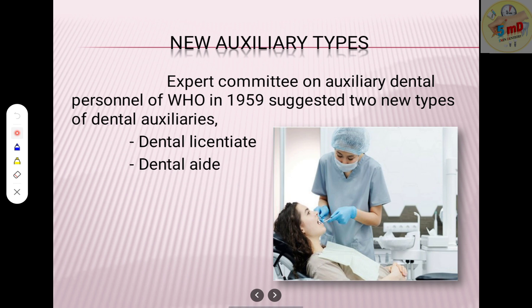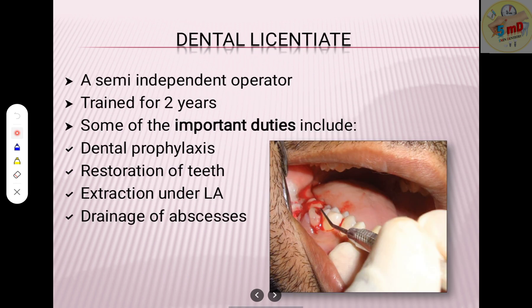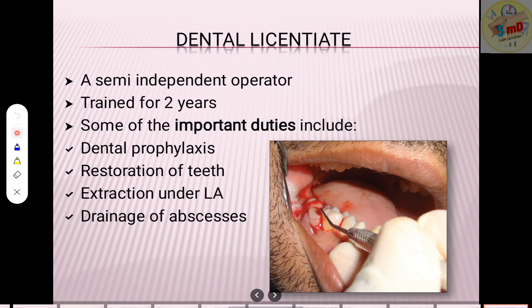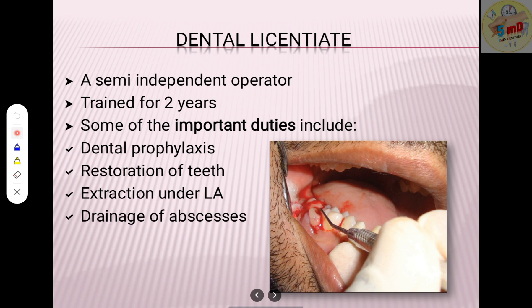Regarding new auxiliary types, the expert committee on auxiliary dental personnel of the World Health Organization in 1959 suggested two new types of dental auxiliaries: dental licentiate and dental aid. A dental licentiate is a semi-independent operator trained for two years. Some important duties include dental prophylaxis, restoration of teeth, extraction under local anesthesia, and drainage of abscess.